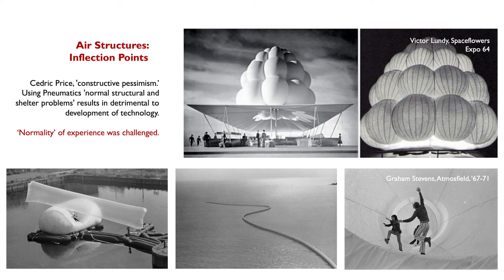Another inflection point came in the mid-1960s to early 1970s, when people started to question whether pneumatics were just shelter or, because of their unique building forms, something of more artistic experience. In Expo 64, three or four formative pneumatic structures were incredibly influential. By 1967, Graham Stevens with his Atmos field had a gigantic inflatable tube that went across a river for people to walk on. There's a boldness to the scale of these works, especially when placed in landscapes on water or floating above it, and to how they were experienced in non-traditional ways.